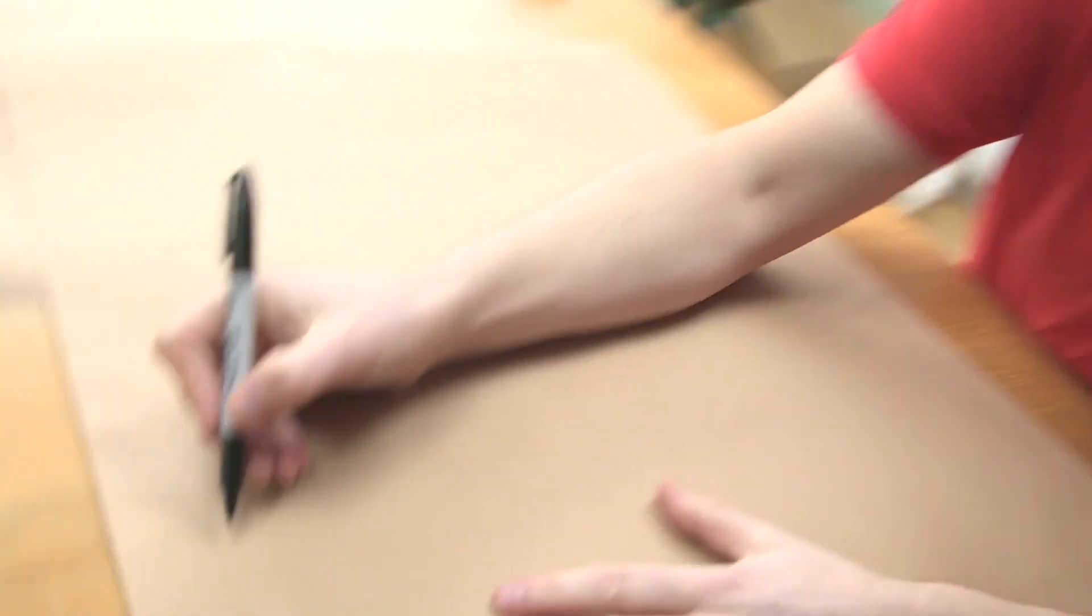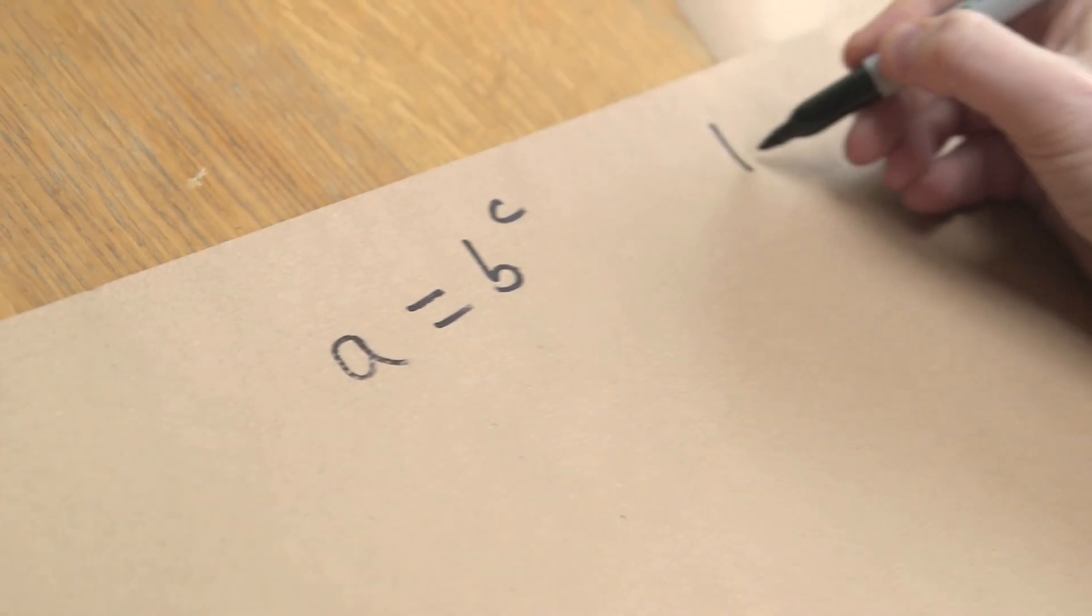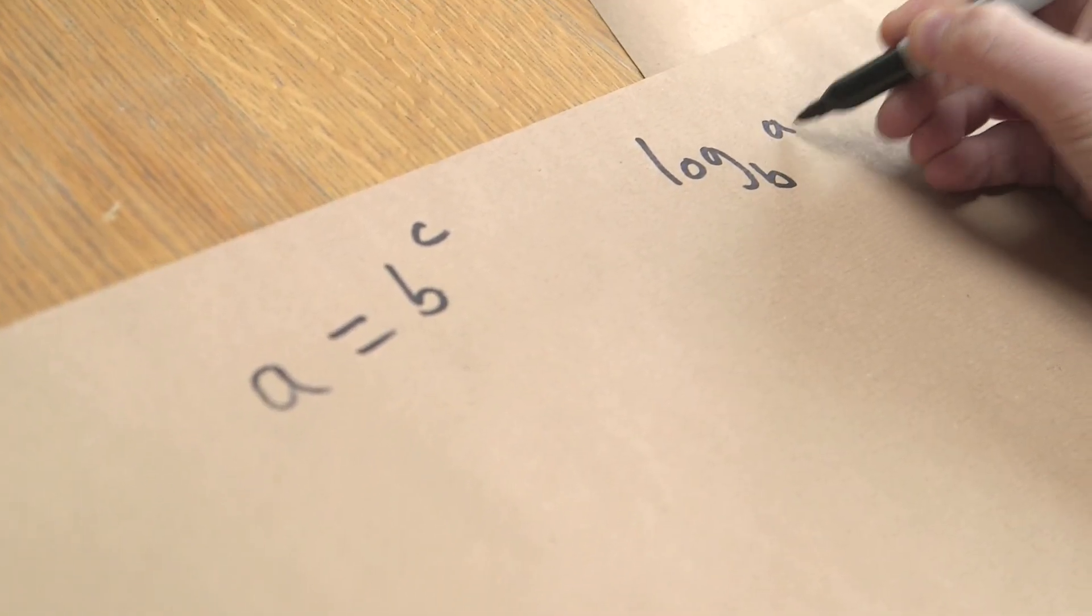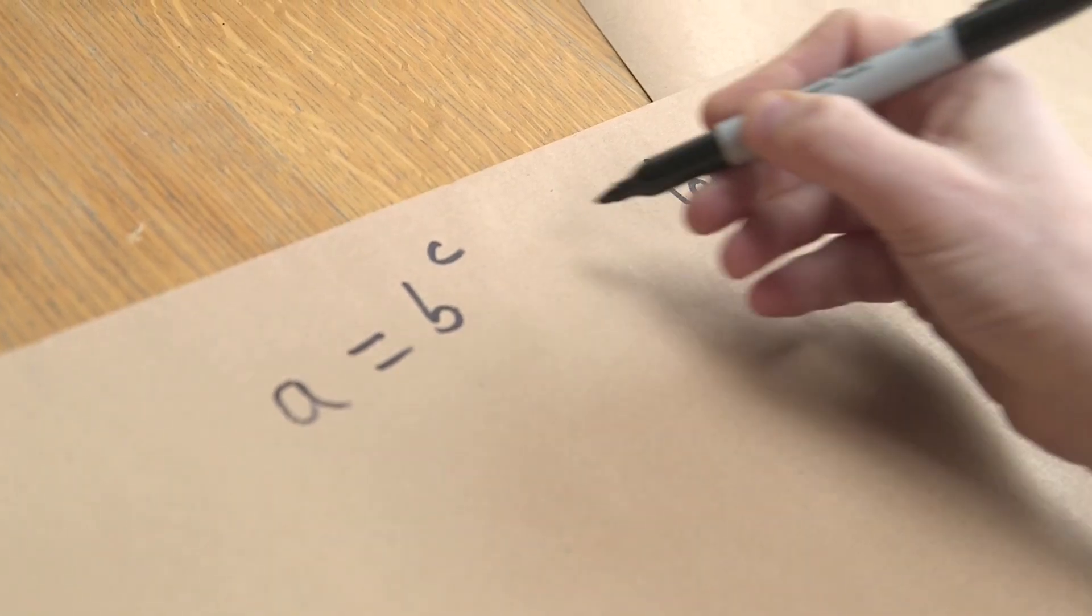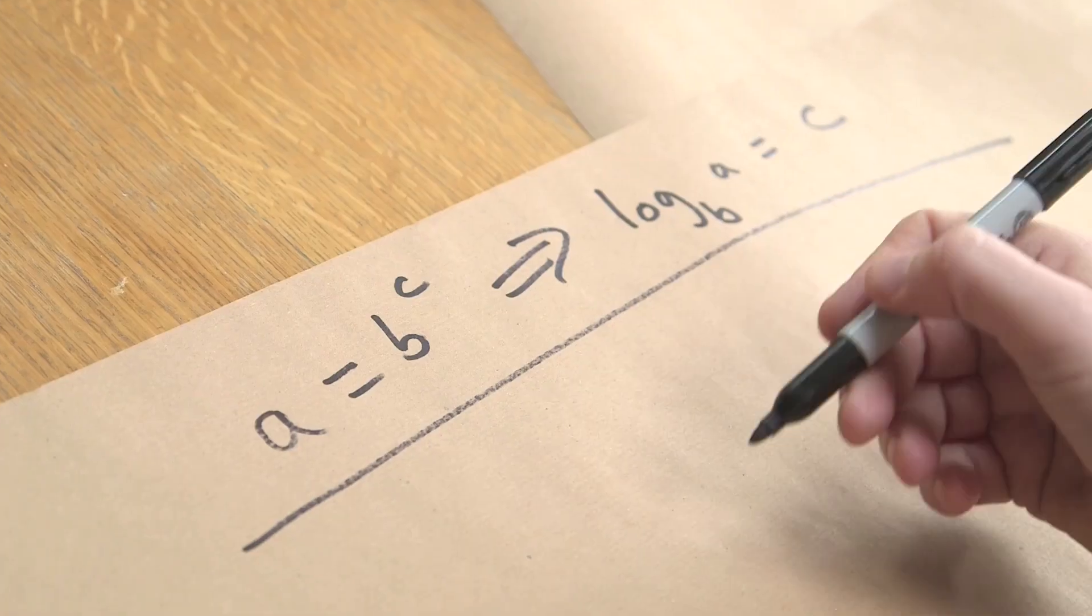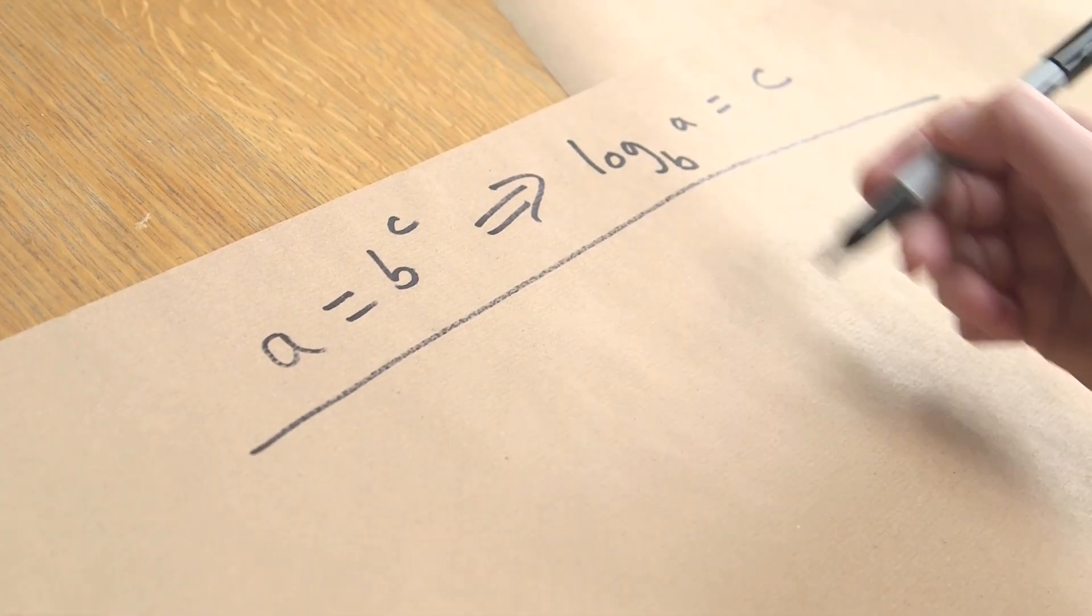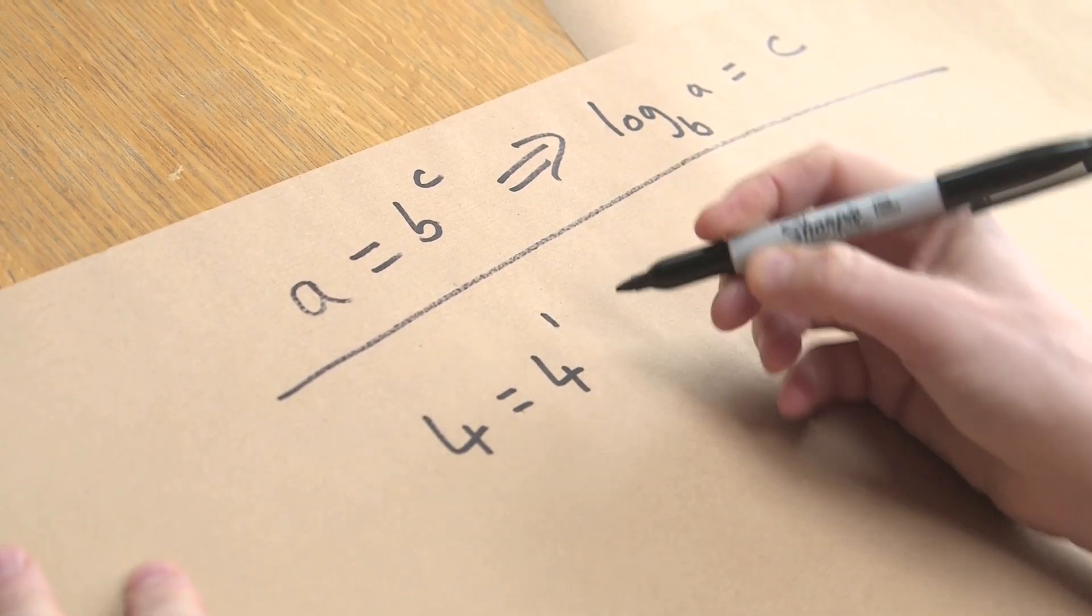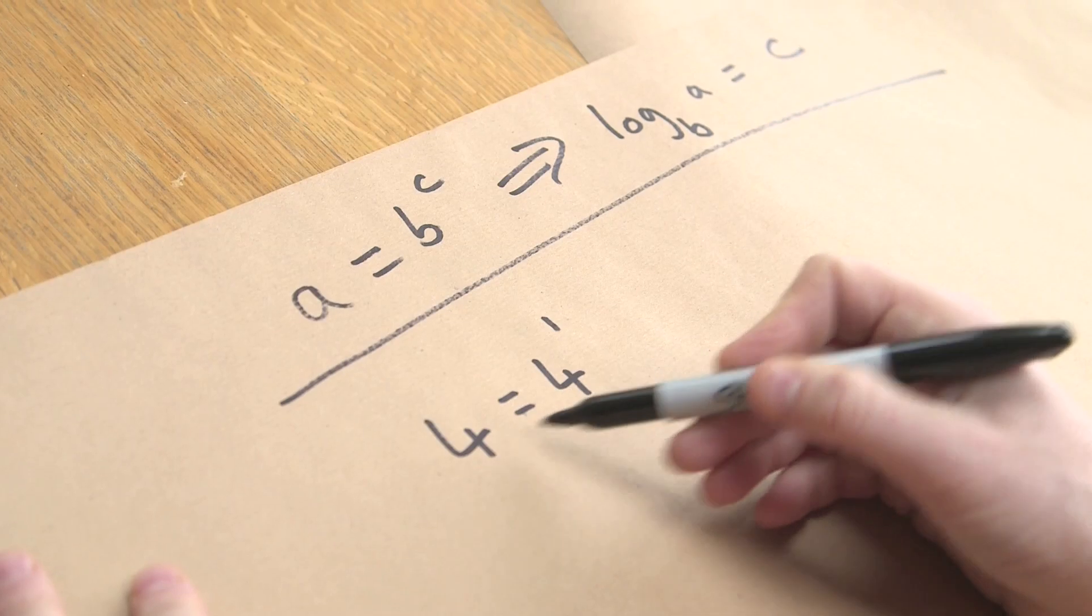This is your brief refresher on what a log is. So if a equals b to the c, then the log base b of a equals c. So that's basically the same thing. Let's put some numbers in, because we're going to be doing log four. So 4 is equal to 4 to the 1, because 4 to the 1 is 4. So the log base 4 of 4 is 1.